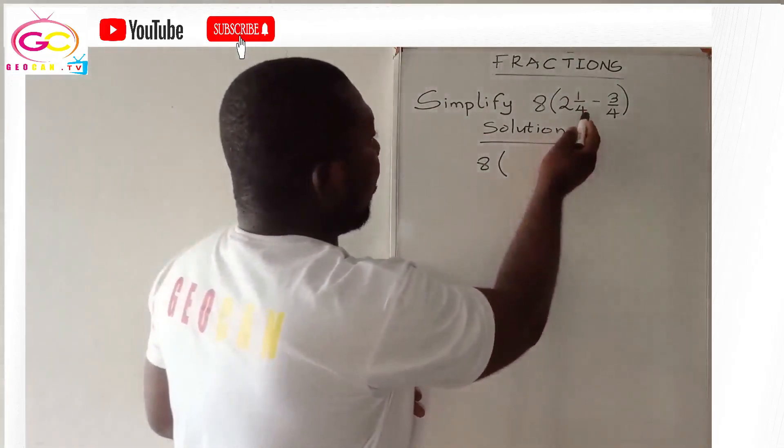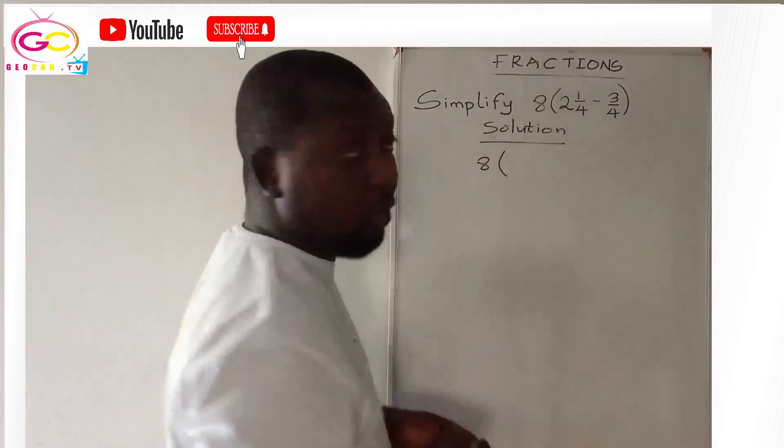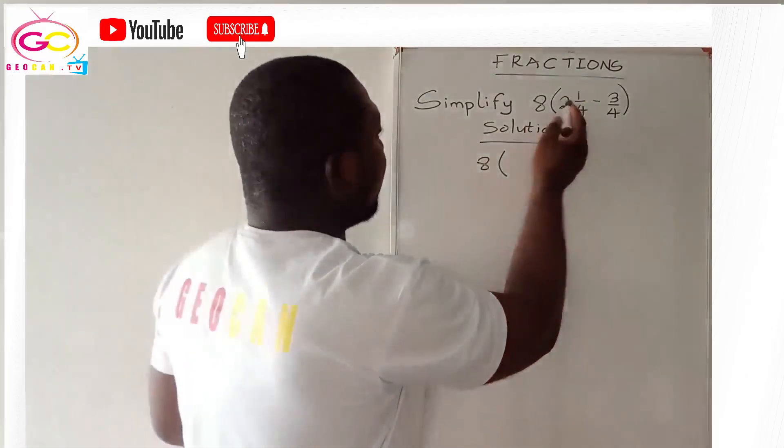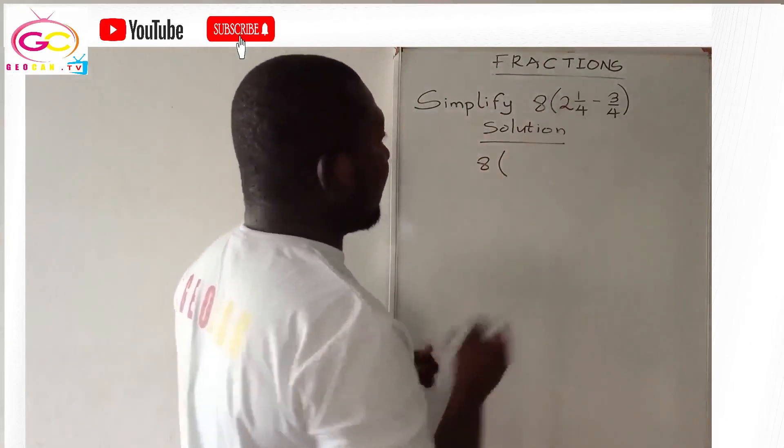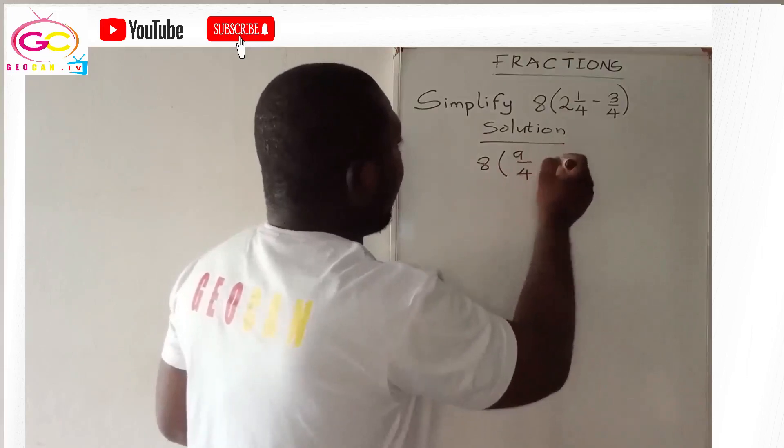How do you do that? Four has to multiply the whole number—that denominator multiply its whole number plus the numerator. So 4 times 2 will give us 8 plus the numerator which gives us 9/4, that's all, minus 3/4.